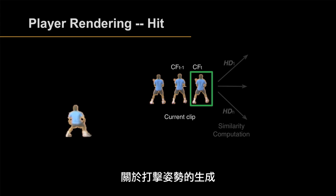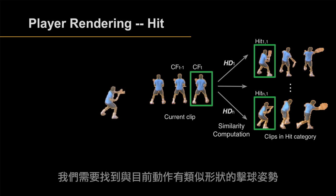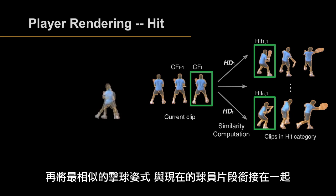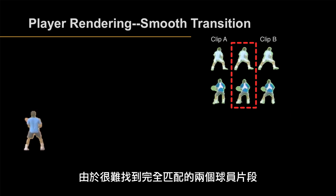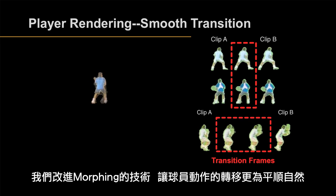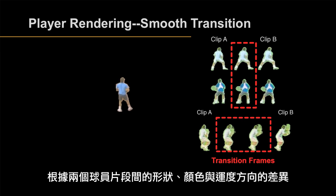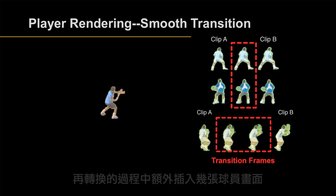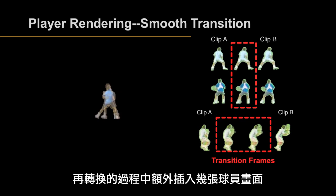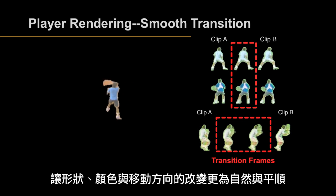When it comes to hitting posture rendering, we need to find and combine the suitable hitting posture which has similar shape and texture with the current clip. Because it is difficult to find a perfect match for two video clips, we introduce a morphing technique to smooth motion transition after selecting suitable cascading clips. Considering shape, color, and moving direction, we insert transition frames to smooth the shape, color, and sudden direction change.